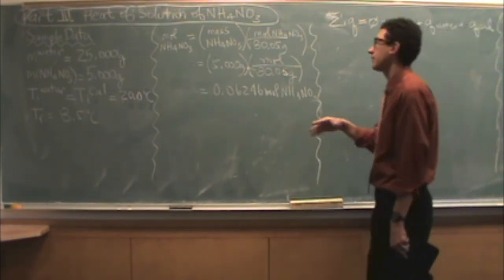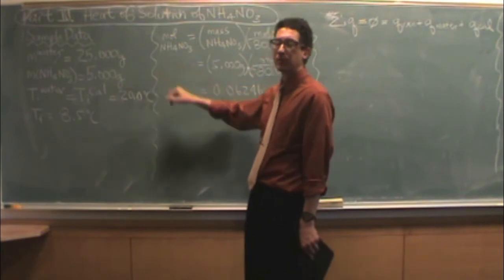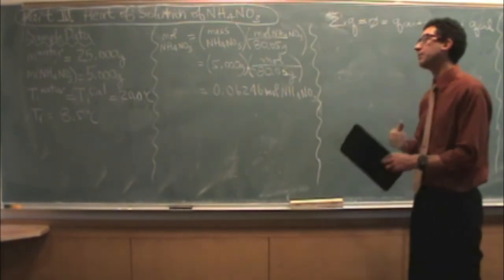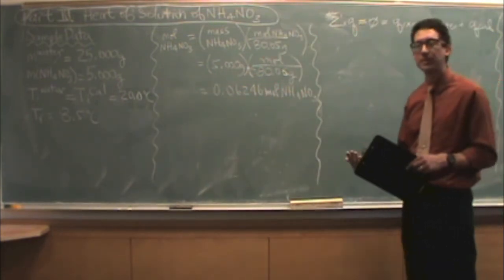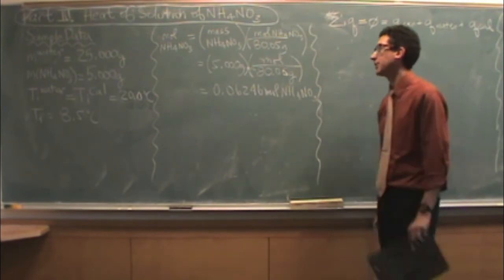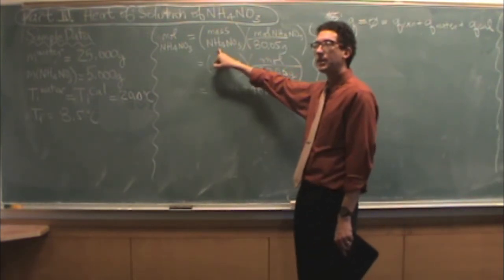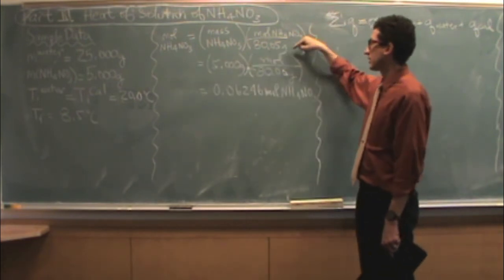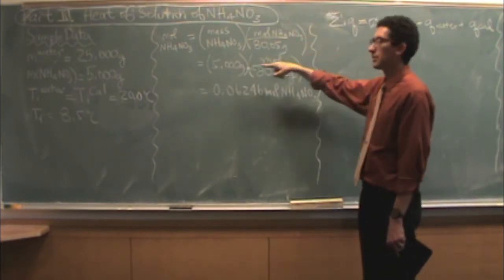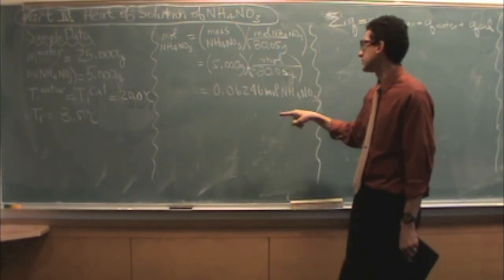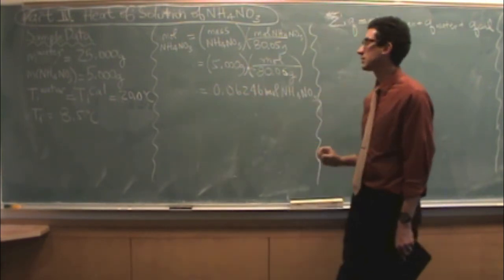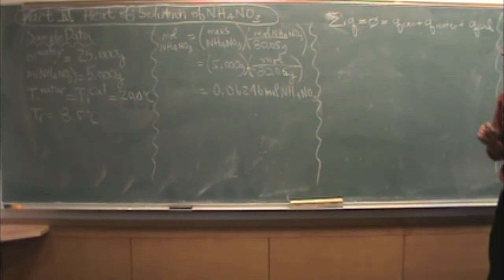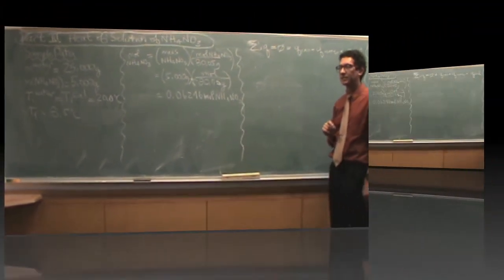The first part of our calculation, we're finding the moles of ammonium nitrate. We're going to use that because that'll help us find the change in enthalpy later. So that's just simple Chem 2A stoichiometry, the mass divided by the molar mass. The grams will cancel out, and we'll get moles, which would be 0.6246 moles of ammonium nitrate in this case.